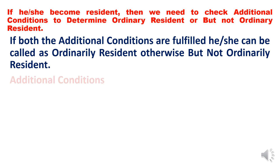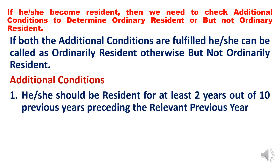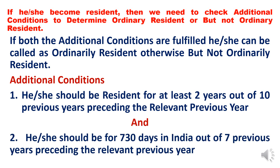The first additional condition is: he or she should be resident for at least 2 years out of the 10 previous years preceding the relevant previous year. To become resident in any of those years, he should satisfy any one of the two basic conditions. The second additional condition uses the word 'and', meaning the individual must satisfy both additional conditions. If the first additional condition is not satisfied, he is directly determined as 'not ordinarily resident'.